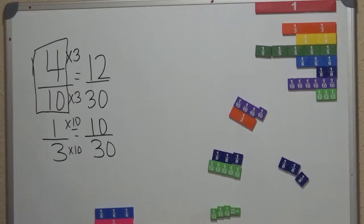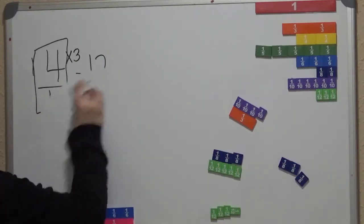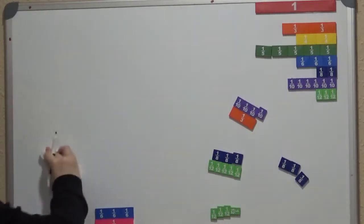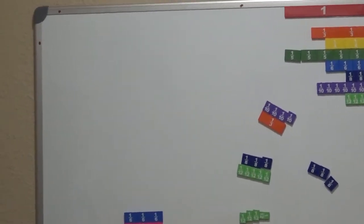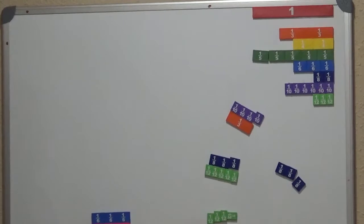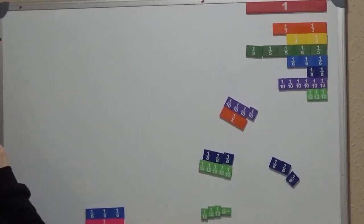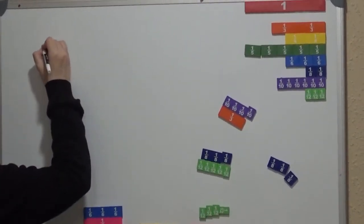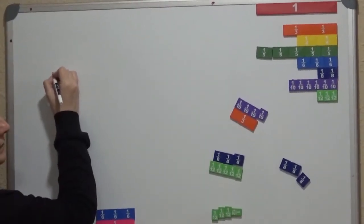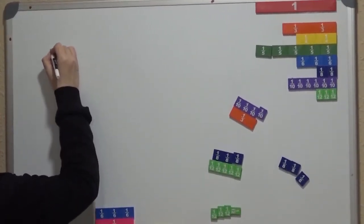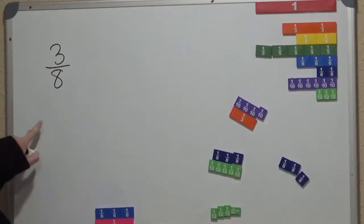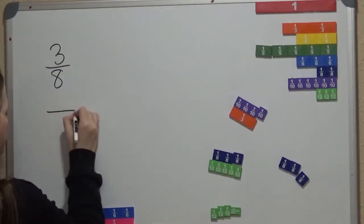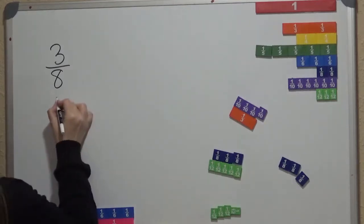That's a good way of doing that. So let's try, go ahead and if you would like, I'm going to go ahead and write one more, and then you see if you can figure it out that way using a common denominator. So let's try, let's see, 3 eighths by 2 fourths.